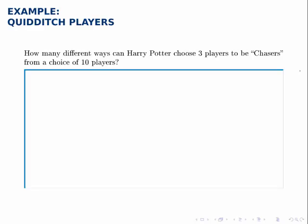How many different ways can Harry Potter choose three players to be chasers from a choice of ten players? Since there's no mention of order within these three players that are chosen, it's just which players do we select. This is a combination formula.